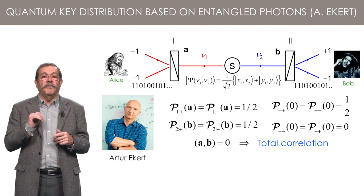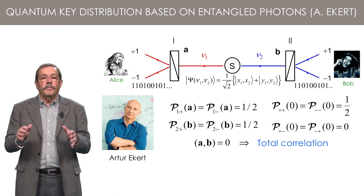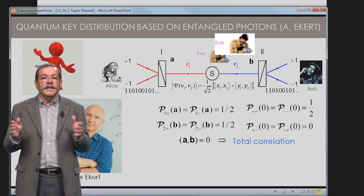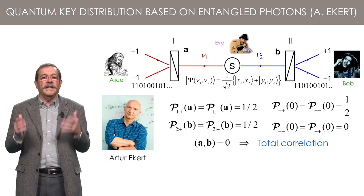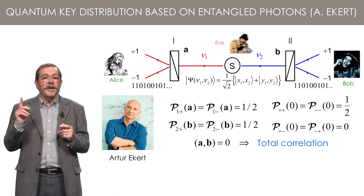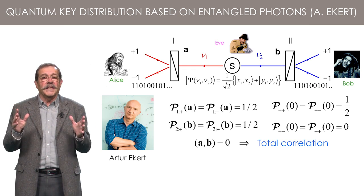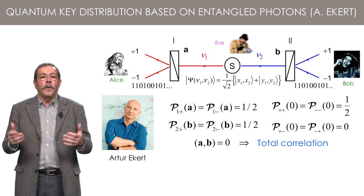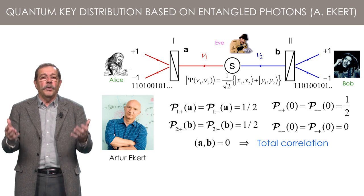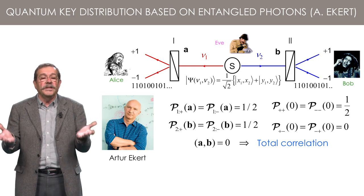A remarkable feature of the Eckert protocol is that the eavesdropper Eve cannot intercept enough information to get his or her own copy of the key. Can you find the fundamental reason? It was given last week, when I explained how quantum calculations allow us to make an image of the correlations in our ordinary space.